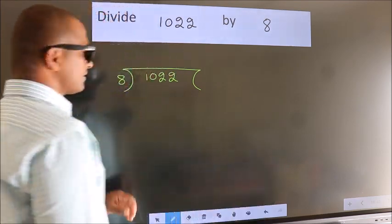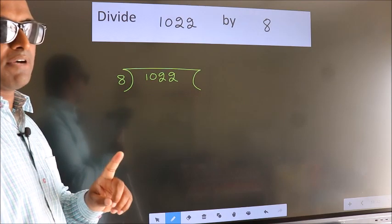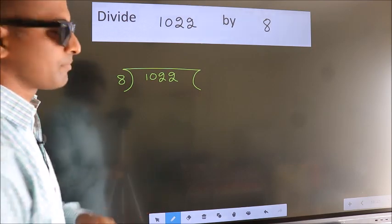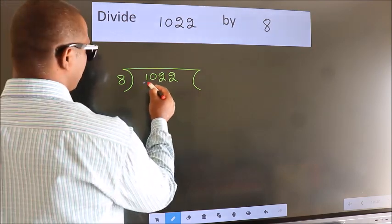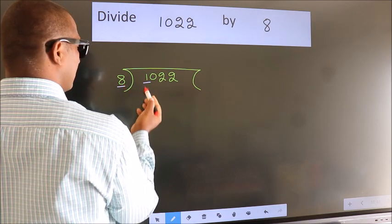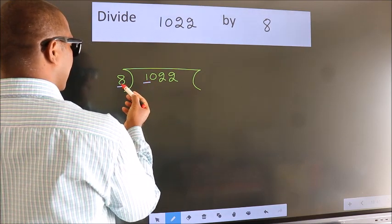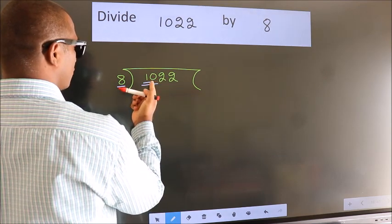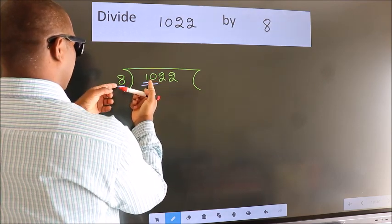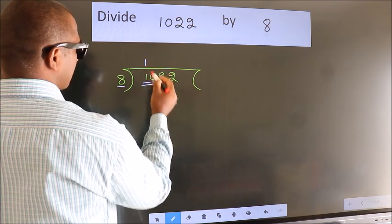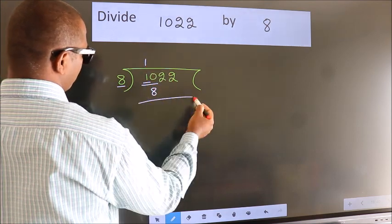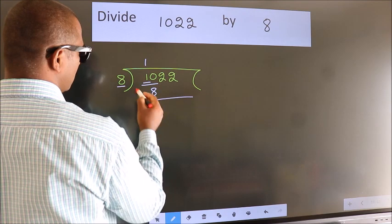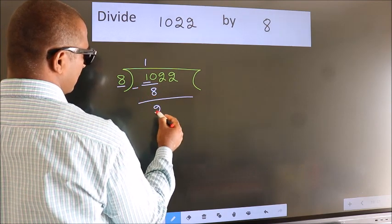This is step 1. Here we have 1, here 8. 1 is smaller than 8, so we should take two numbers: 10. A number close to 10 in the 8 table is 8 once 8. Now we subtract and get 2.